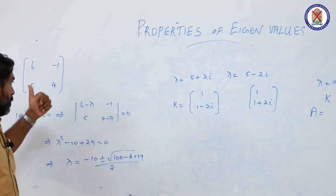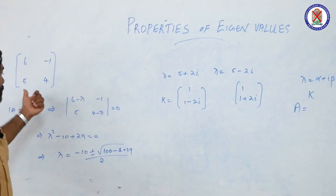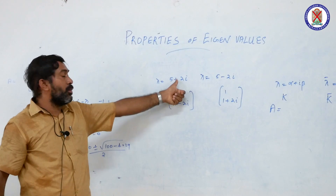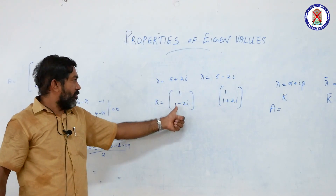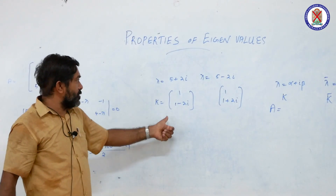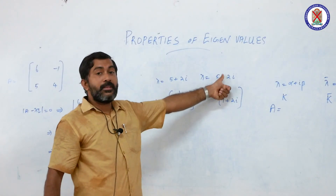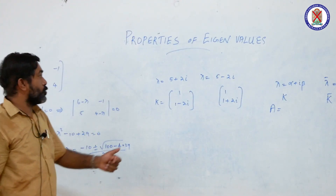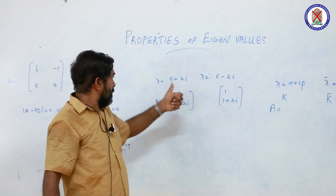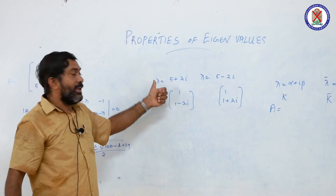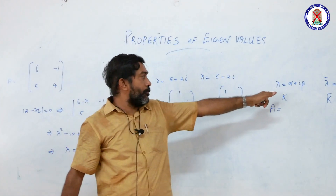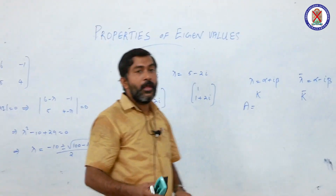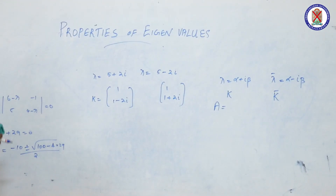By solving the system, the eigenvector corresponding to lambda equal to 5 plus 2i is [1, 1 minus 2i]. Similarly, the eigenvector corresponding to 5 minus 2i is [1, 1 plus 2i]. This confirms that if K is the eigenvector corresponding to lambda equals alpha plus i*beta, then K conjugate is the eigenvector corresponding to lambda conjugate.